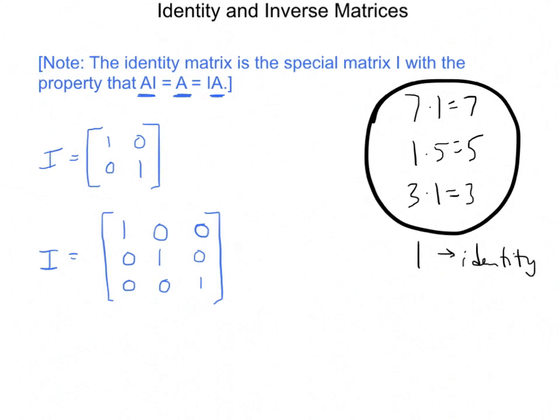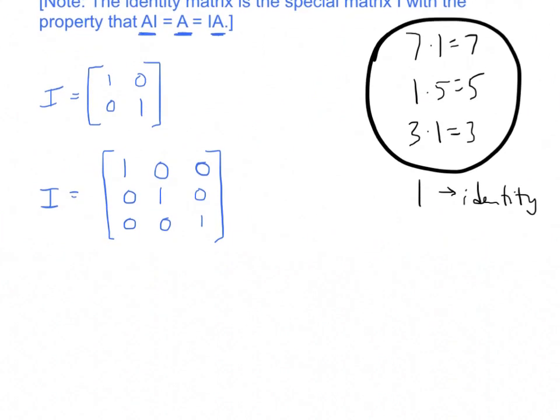Just to sort of confirm this really quickly, let's take a look. If you were to do 3, negative 1, 5, 17 times the identity matrix, what do we expect that the answer would be? We should expect the answer is going to be 3, negative 1, 5, 17.